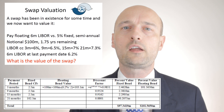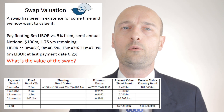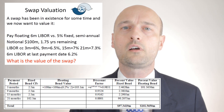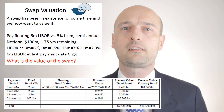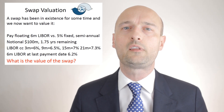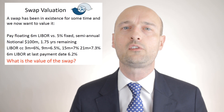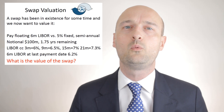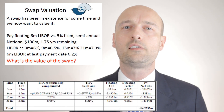The value to the receive-fixed counterparty is the fixed bond valuation minus the floating bond valuation — the swap is worth minus $4.22 million. That's all we have to do to price our swap using the bond method. Next, let's value the same swap using the FRA portfolio method. We draw up a table with many of the same elements — the fixed cash flows, time periods, and discount factors are calculated in the same way.